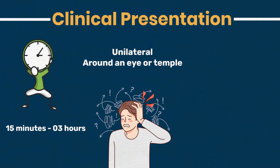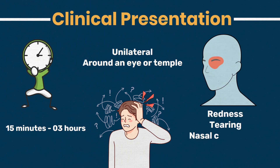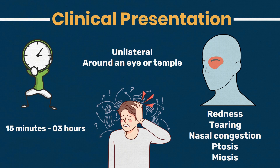Cluster headaches are often accompanied by autonomic symptoms on the affected side, such as redness and tearing of the eye, nasal congestion, ptosis (drooping of the eyelid), and miosis (constricted pupil). These symptoms may occur simultaneously with the headache or shortly before or after its onset.